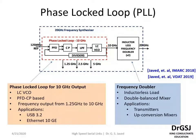The frequency doubler given here is used to double the frequency from 10 gigahertz to 20 gigahertz. In this system, an inductor-less load is used and the mixing action is performed by a double balanced mixer to achieve the doubling action. The typical applications of this block include transmitter chains and upconversion mixers. Both works were presented at IMARC 2018 and the VLSI Design and Test Automation conference in 2019.